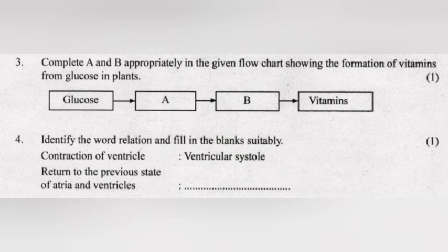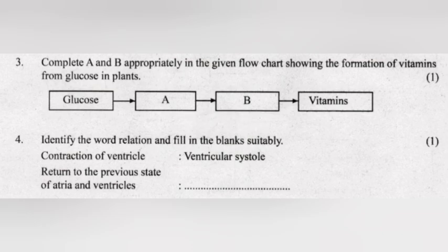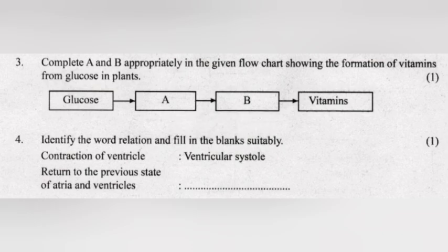Question 3: Complete A and B appropriately in the given flowchart showing the formation of vitamins from glucose in plants. Answer: A — Starch. B — Sucrose.